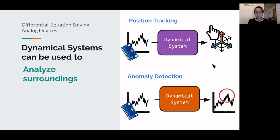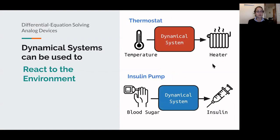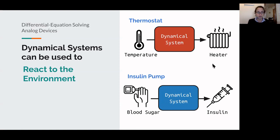You can take this one step further and use dynamical systems to react to the environment — taking a dynamical system processing sensor input and hooking it up to an actuator to affect environmental conditions. A classic example is a thermostat which observes the temperature in a room and adjusts the heating element to reach a target temperature. Similarly, you can monitor blood sugar levels and adjust insulin to meet a target blood sugar level.